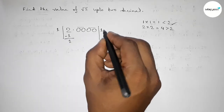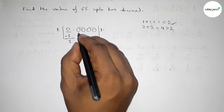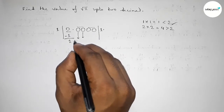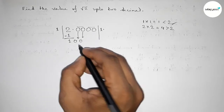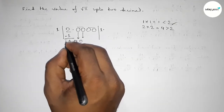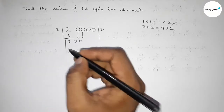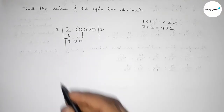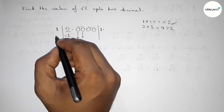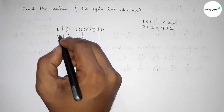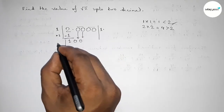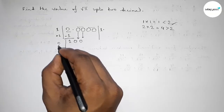Now subtracting: 2 minus 1 equals 1. We note this remainder and bring down the next pair of zeros, giving us 100. Drawing the division line and now discussing the next important concept.